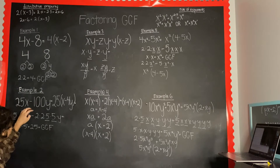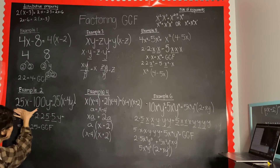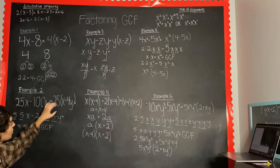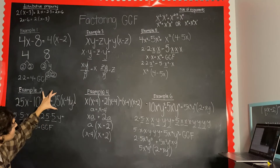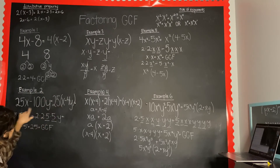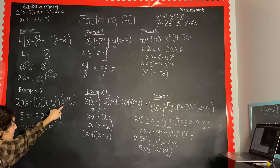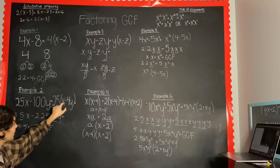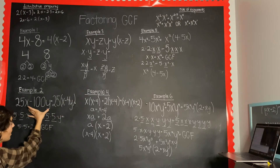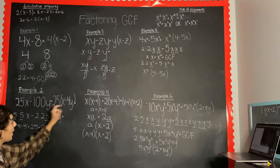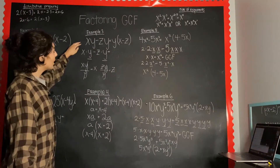Multiply the common factors together — in this case we get 25, and that is our greatest common factor. We divide our original expression by the GCF: 25x divided by 25 is x, minus 100y divided by 25 is 4y. And there's your answer.